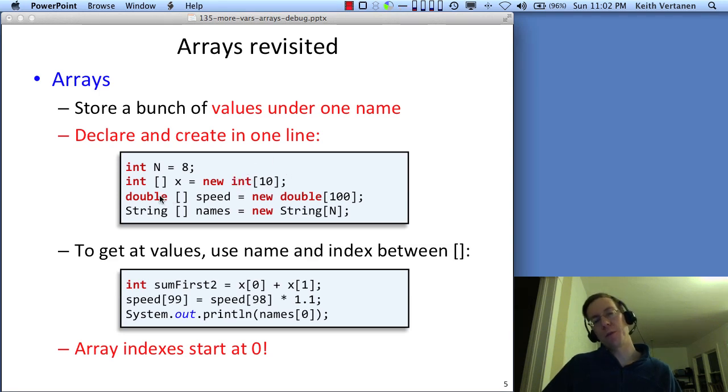If we want to store something different like floating point values, we can change the type to double. Remember, you've got to match both sides. And if you want to store strings, you could change the data type to string.